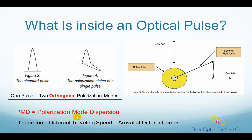You can also understand PMD as arrival timing difference between these two polarization modes. So then, what is polarization mode? Figure 3 shows a standard light pulse. It seems like a single pulse, but as shown in Figure 4, this pulse is actually composed of two polarization modes, which are 90 degrees perpendicular to each other. We call them orthogonal.